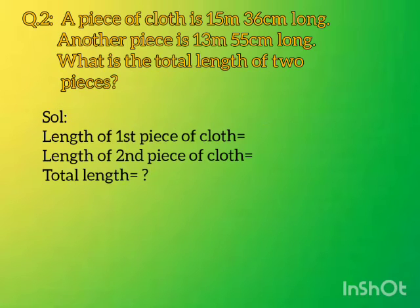The length of the first piece is 15 meter 36 cm long and the second piece of cloth is 15 meter 35 cm long. Now students, what is the total length? We will find total length. We will write it in meters and in centimeters.